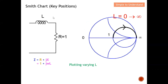Next, how do you plot an inductor in series with a resistor value of one? I first identify the resistor value of one, then I need to plot the value of L. The inductance can vary from zero to infinity. At zero, the point appears at the resistor location; as it moves to infinity, it moves along the corresponding circle. Depending on the value of L, you plot one point along this arc. Importantly, for an inductor, the point always appears above the resistance line.